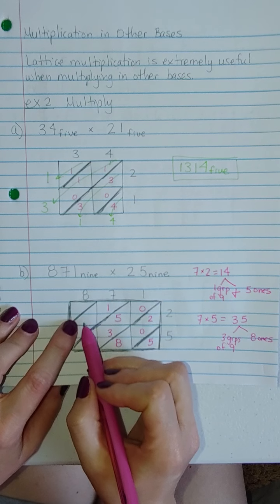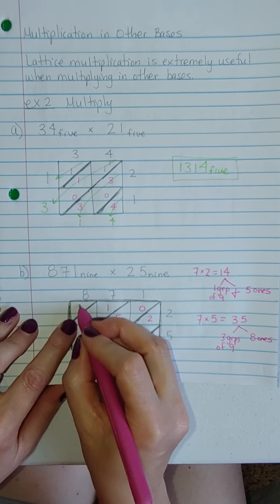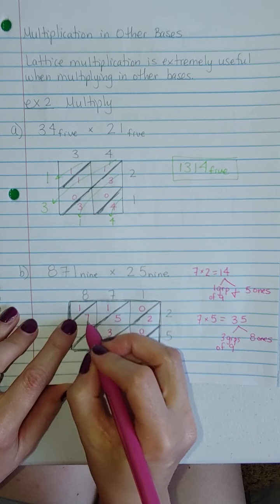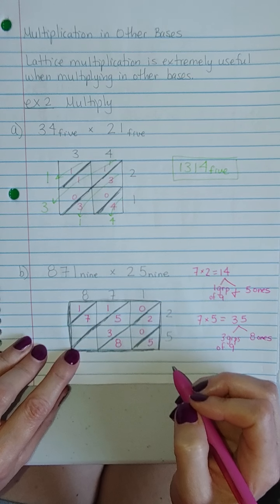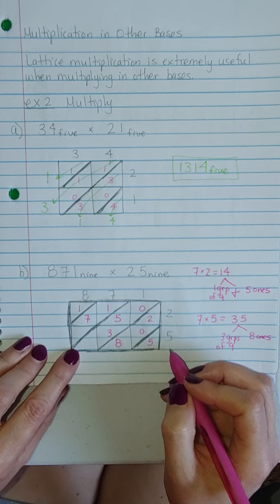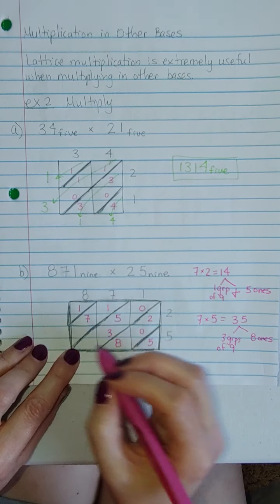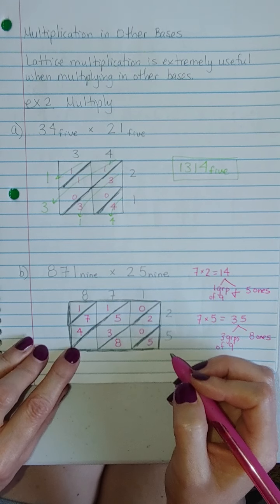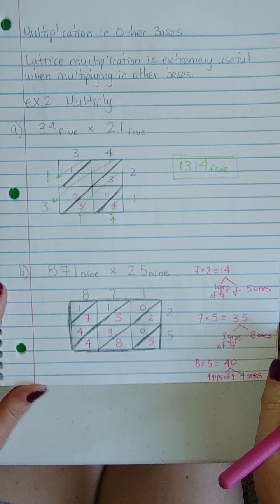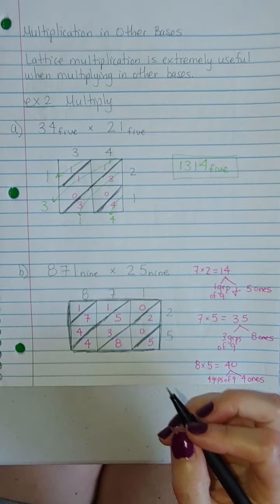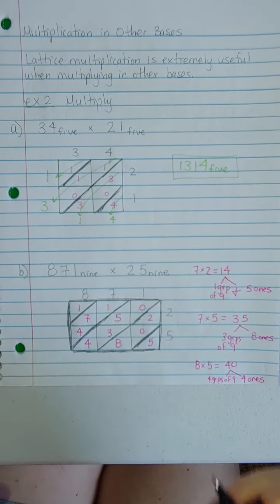8 times 2 is 16. 16 is 1 group of 9 with 7 left over. 8 times 5 is 40. 40 is 4 groups of 9. 4 times 9 is 36. With 4 left over. So that's 4 groups of 9 and 4 ones. Then we just have to add along the diagonals in base 9. So you've still got to be thinking about base 9.